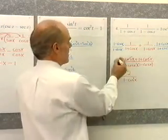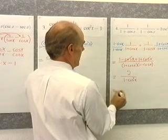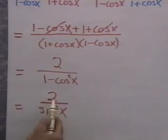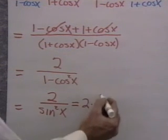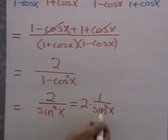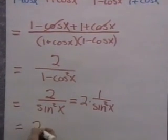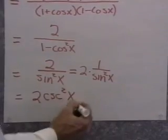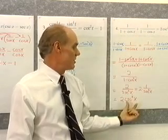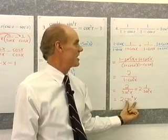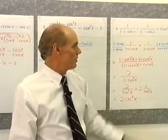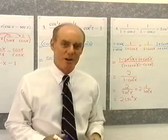I have 2 over sine squared x, which is 2 times 1 over sine squared. Since 1 over sine squared is cosecant squared, I have 2 cosecant squared x as the result. So I've succeeded in simplifying this complicated expression into simply 2 cosecant squared x — and I did it by adding fractions the same way I would add fractions in algebra. Let's go to the board now and look at problem number 5, another identity to prove.